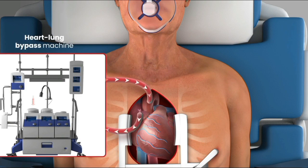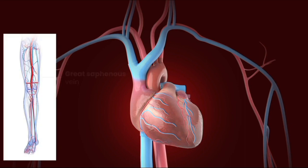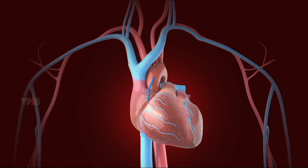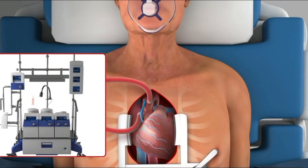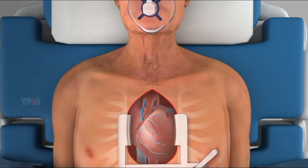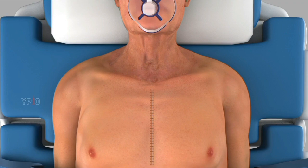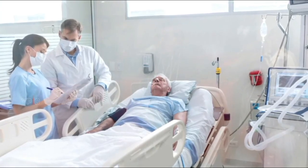Your doctor will harvest a piece of blood vessel graft, usually the great saphenous vein from the leg, to construct a bypass by sewing one end to a small opening in the aorta and the other end to an opening in the coronary artery just below the blockage. After the bypass graft is established, the heart-lung machine is disconnected, circulation is restarted through the heart, and the incision is closed with absorbable sutures. CABG surgery usually takes about three to six hours, after which you will be transferred to the intensive care unit for monitoring.